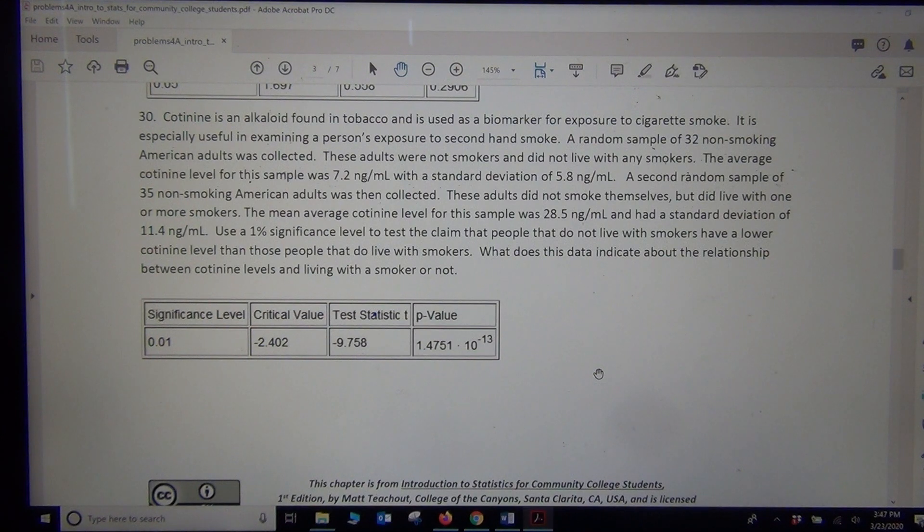Alright, so let's take a look at the numbers down here. They plugged the data into StatCrunch, and we got a test statistic of negative 9.758, p-value very close to 0. This times 10 to the negative 13 means move the decimal 13 places to the left. So it's like 12 zeros and then 1.4, so very close to 0. So this is looking very significant here.